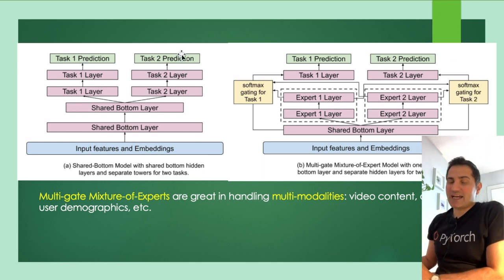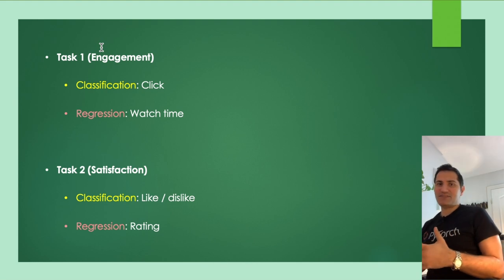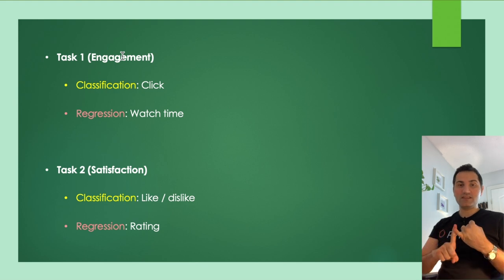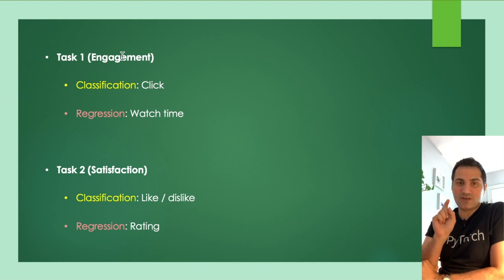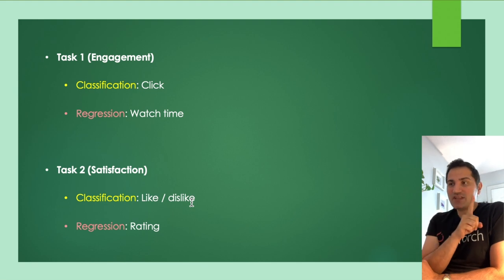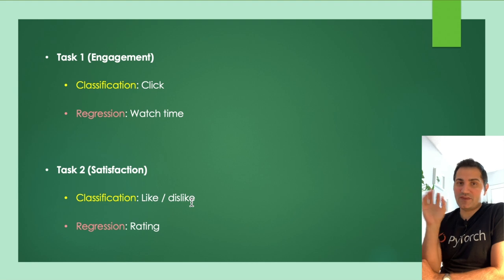There are two main task categories — engagement and satisfaction — each with different subtasks. For engagement, we track click (a classification problem predicting whether a user will click) and watch time (a regression predicting how long a user watches). For satisfaction, we have a classification head predicting whether a user will like the video, and a regression head estimating the rating for that video.